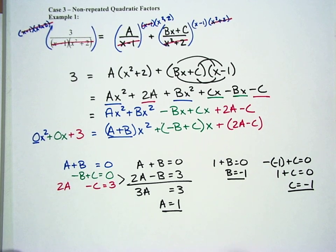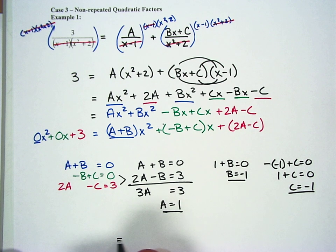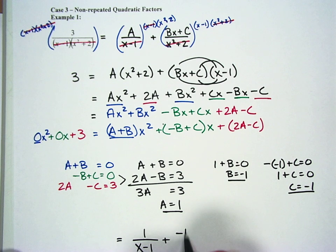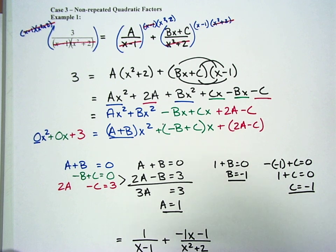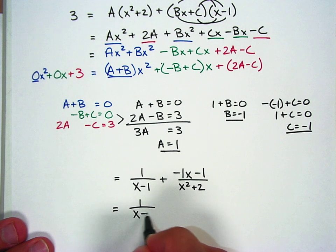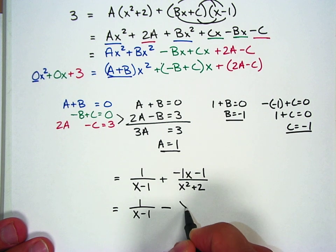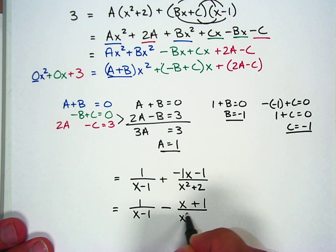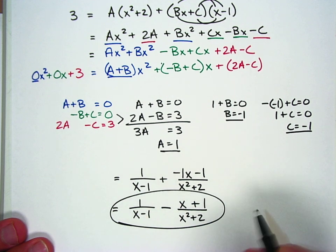So the next step is, and the final step, is just to plug them back in. And so we're going to say 1 over (x minus 1) plus negative 1x minus 1 over (x squared plus 2). Last thing, just to make it more proper, is to take this negative plus minus. If I factor out a negative, I'm going to factor out a negative from here and here. So it's actually going to become 1 over (x minus 1) minus (x plus 1) over (x squared plus 2). And that's my final answer.